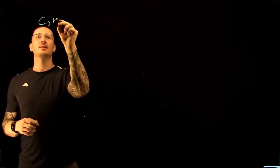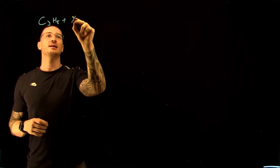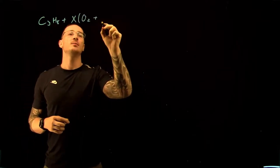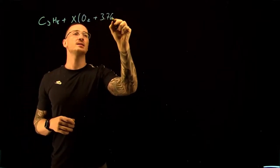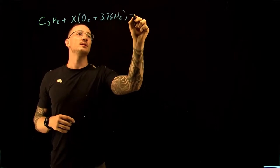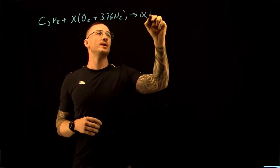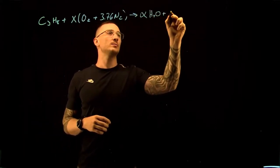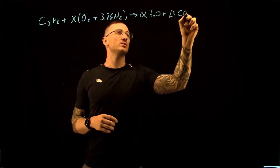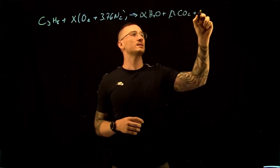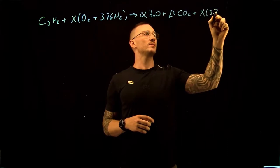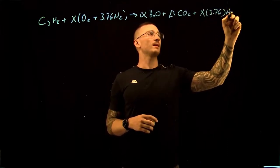Propane is C3H8. So the first thing we're going to do is look at our stoichiometric reaction. We have C3H8 plus some X amount of O2 plus 3.76N2. This is going to give us some alpha amount of H2O plus some beta amount of CO2 plus X times 3.76N2.